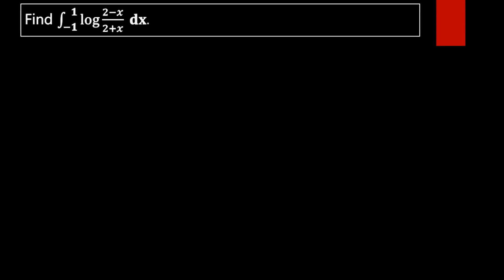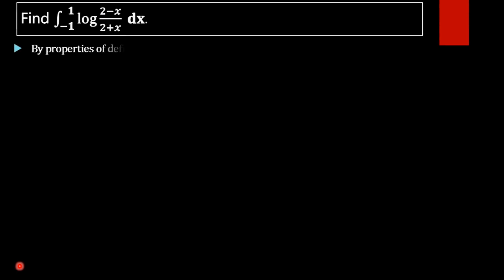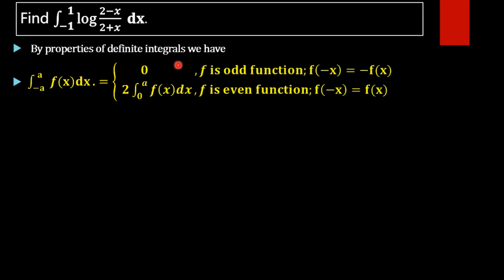Here we have to find the value of this integral. In order to find the value of this definite integral, we are going to use its properties. By the properties of definite integrals, the integral from minus a to a of f(x) dx equals 0 if f is an odd function, and equals 2 times the integral from 0 to a of f(x) dx if f is an even function.